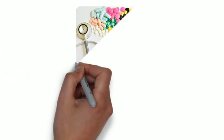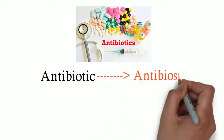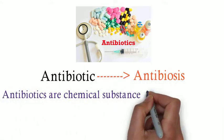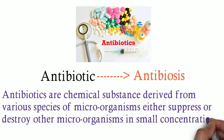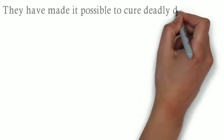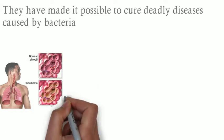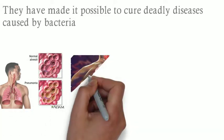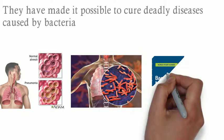The first concept is antibiotic. Antibiotic means against life. Antibiotics are chemical substances derived from other microorganisms which suppress or destroy microorganisms in small concentrations. Many antibiotics cure deadly diseases caused by bacteria, such as pneumonia by pneumococcal pneumonia and tuberculosis by Mycobacterium tuberculosis.